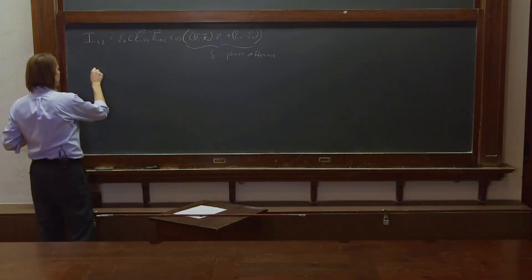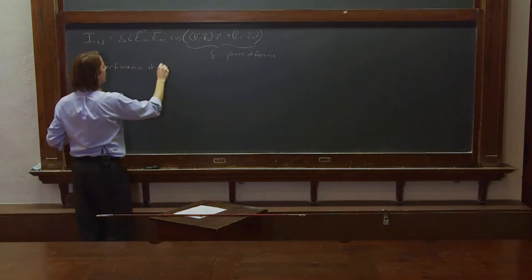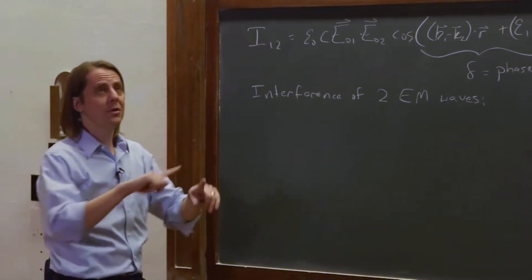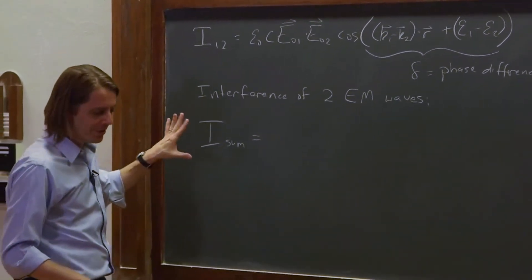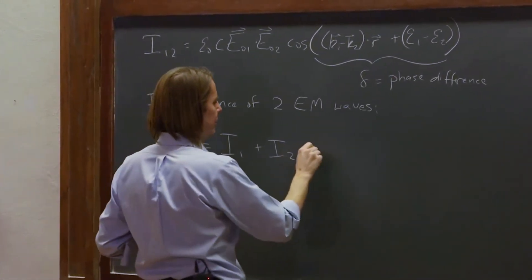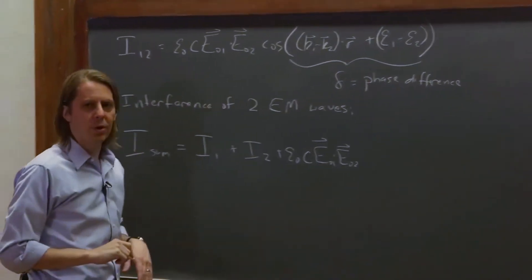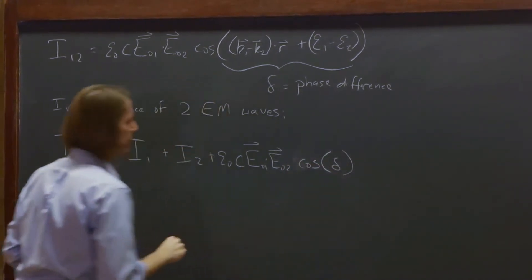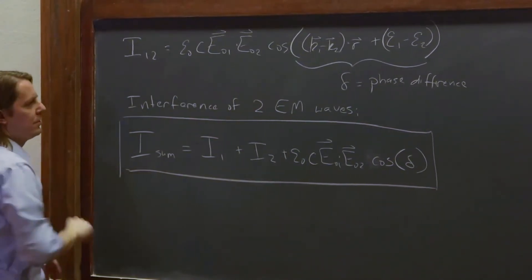So altogether, the interference of two EM waves — given the conditions we stated at the beginning: same frequency, different directions — gives an observed irradiance I_sum equal to the irradiance of the first plus the irradiance of the second, plus epsilon naught C times the dot product of their amplitude vectors E naught 1 and E naught 2, times the cosine of delta, where delta equals (K1 minus K2) dot R plus (phase 1 minus phase 2).